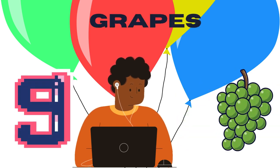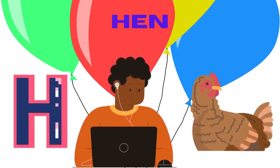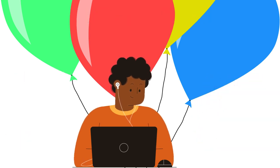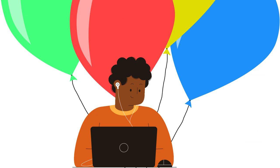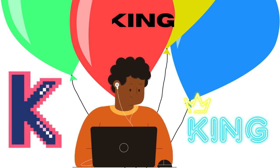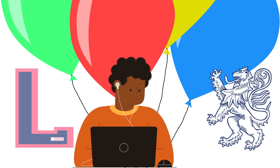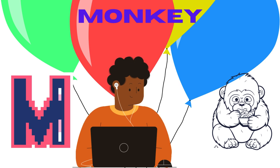H for hen, I for ice cream, J for jug, K for king, L for lion, M for monkey.